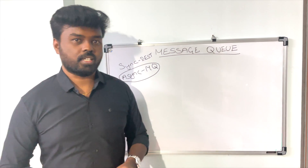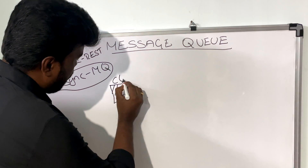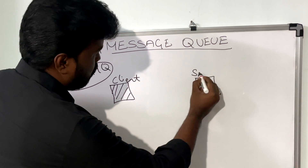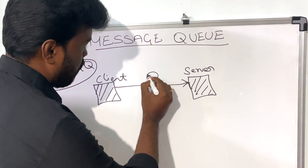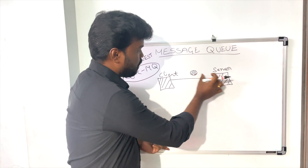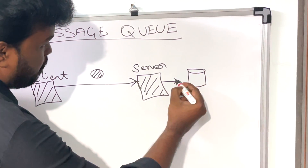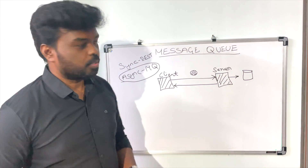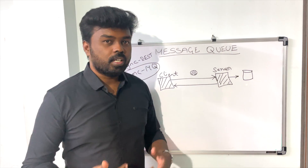Now let's see how it actually works in a typical client-server setup. You have a client and a server. The client raises a request to the server, and the request may have some data that needs to be processed. The server receives the request, processes the data, and stores it in a database. Once the data is processed and stored, the server gives a response back to the client. This is the typical example of how client-server communication happens in a synchronous way.